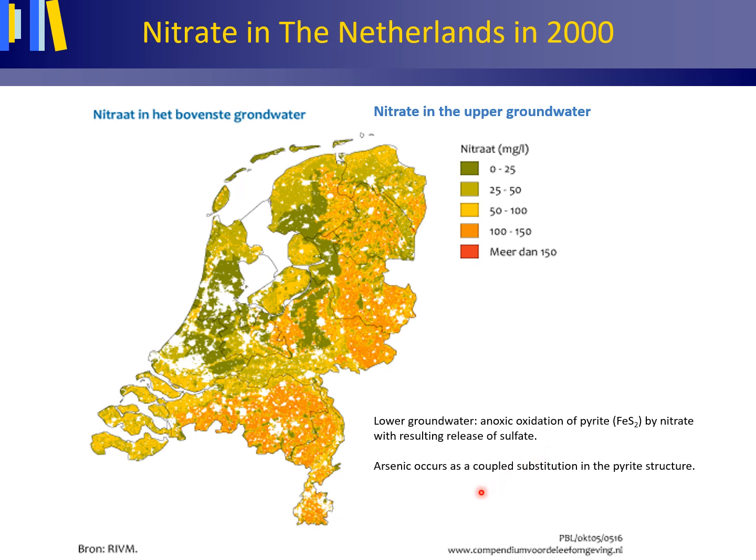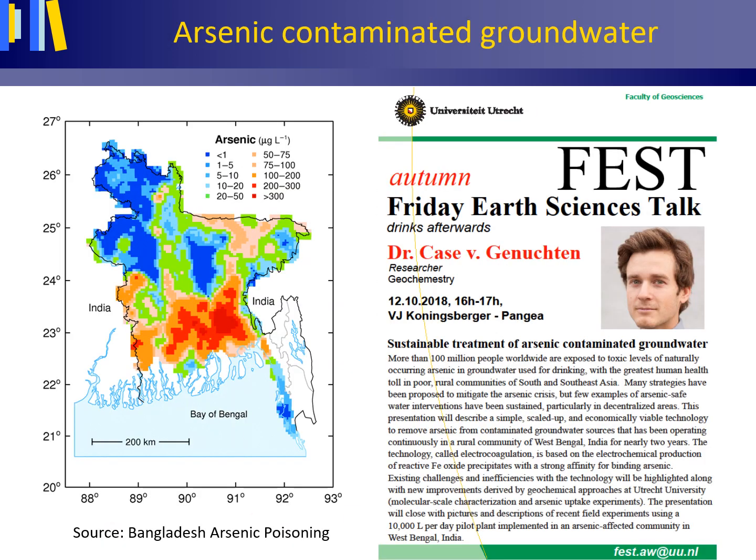Arsenic occurs as a coupled substitution in the pyrite structure. Toxic levels of naturally occurring arsenic in groundwater used for drinking water are a major threat to more than 100 million people worldwide, mainly in South and Southeast Asia, dramatically raising their risk for cancer and other serious diseases.